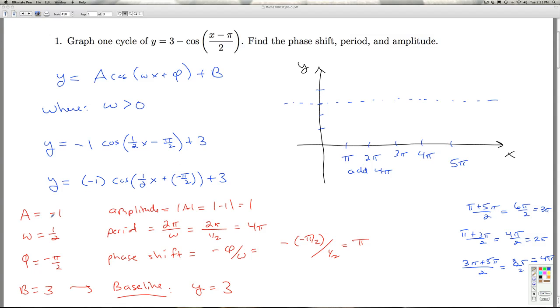Since the A here is a negative 1, the cosine curve is going to be reflected. So we're going to start one unit below the baseline. And then we're going to follow the pattern. The baseline,